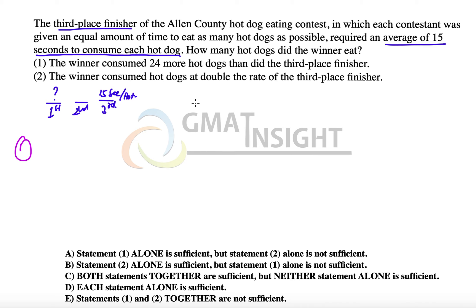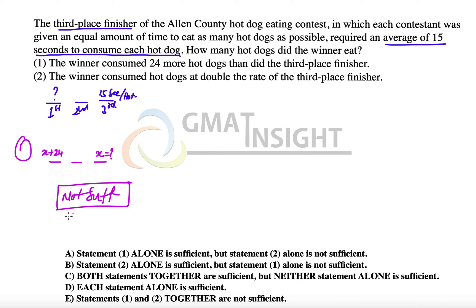Since the winner's total hot dogs eaten depends on the third place finisher's total, we cannot answer the question from Statement 1 alone. If the third place finisher ate x hot dogs, then first place ate x plus 24. But we don't know the value of x, so we can't determine how many hot dogs the winner ate. Therefore, Statement 1 alone is not sufficient, and options A and D are eliminated.